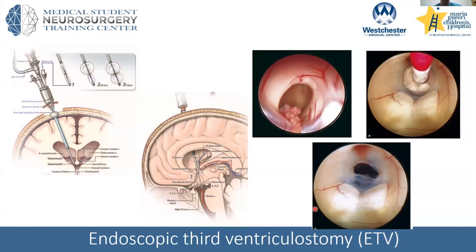For patients with obstructive hydrocephalus — for example where the aqueduct is very narrowed — you can do a procedure where you leave no hardware behind. A lot of this grew out of experience in Africa, where neurosurgeons would volunteer for about a month, place many shunts, but shunts are not perfect — they're made of plastic, they can fracture, break, or pull out. When these neurosurgeons left the country, these kids had no treatment for those complications, so this procedure was developed as a way to treat hydrocephalus without leaving any hardware behind.